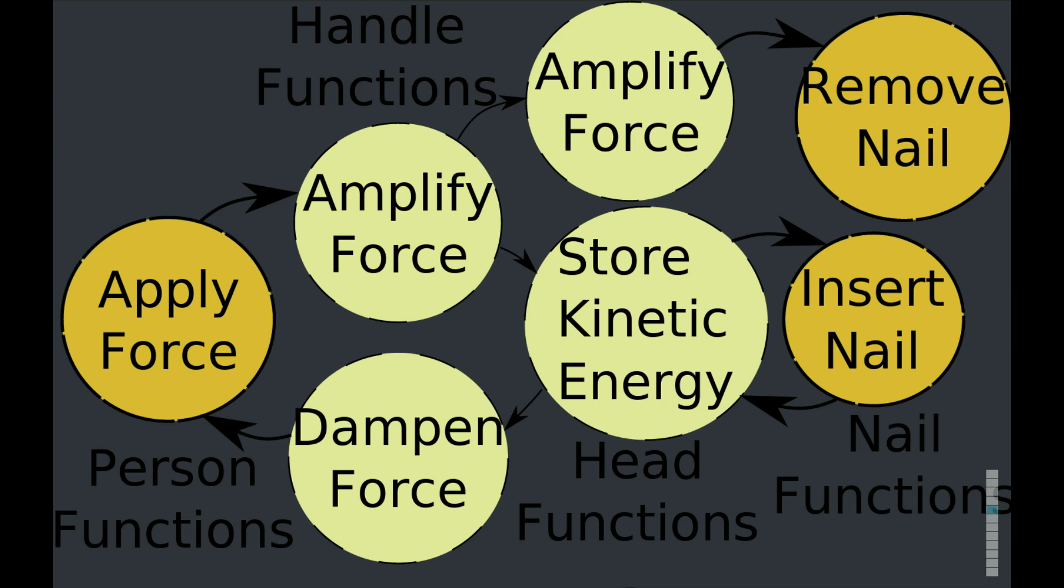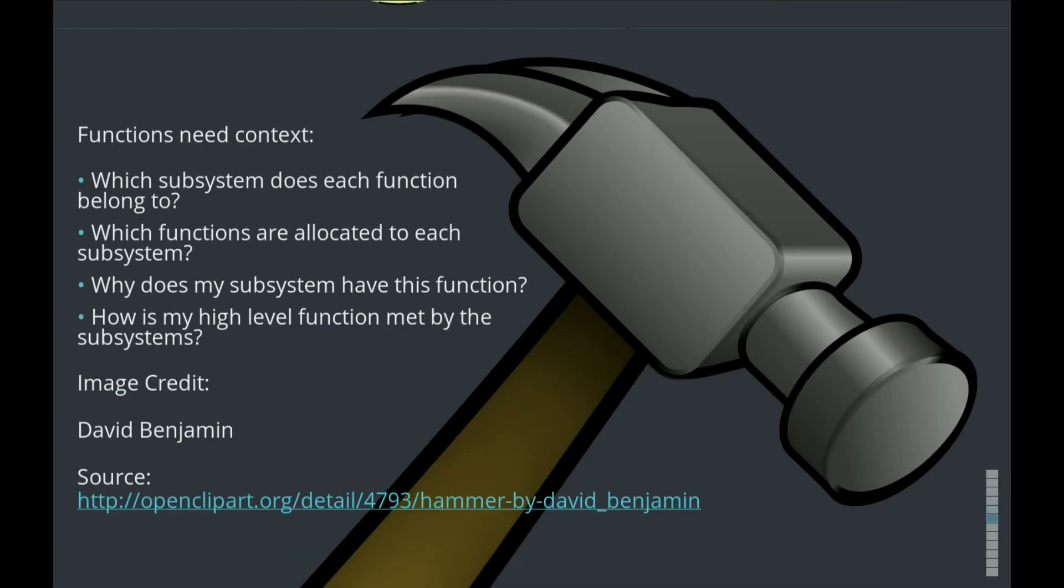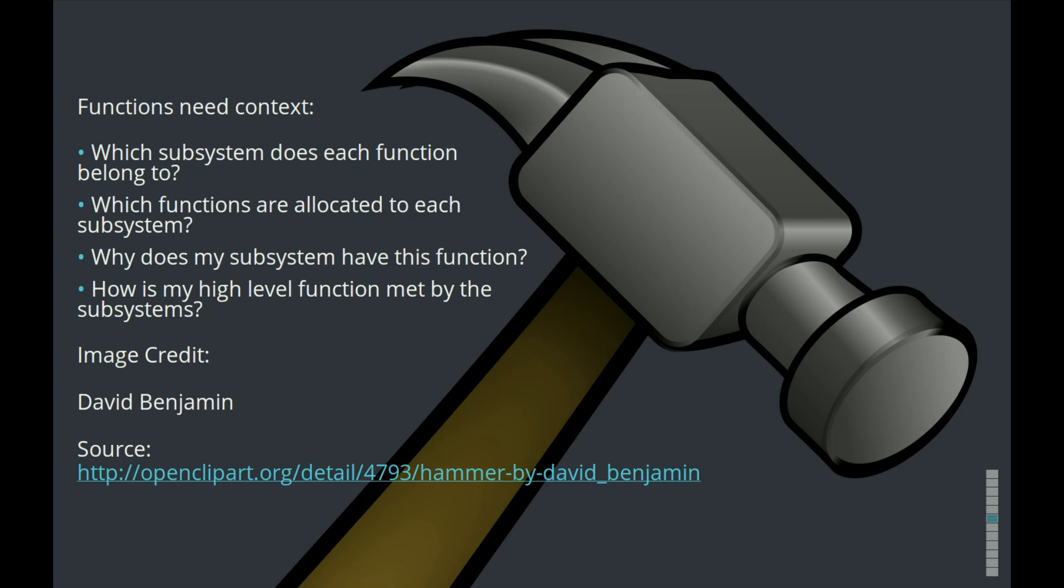When we look at that diagram, it can be a bit tricky to get a sense of what subsystem each function belongs to, which functions are allocated to which subsystem, and why a subsystem even has a particular function. It's easy to get lost and to not really understand why a subsystem has a particular function. And it's hard to tell exactly how a high-level function is actually met by the functions that make it up.